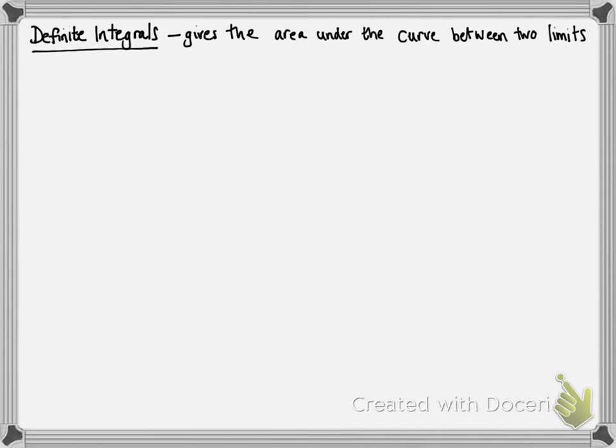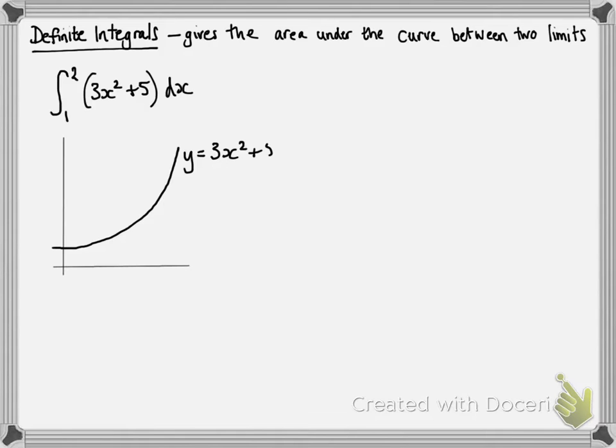So, let's see this in practice. Our definite integral gives us the area under a curve between two limits. So, here we have an example. We're looking at the curve 3x squared plus 5. And we're finding this area under the curve between 1 and 2. So, we integrate as usual.